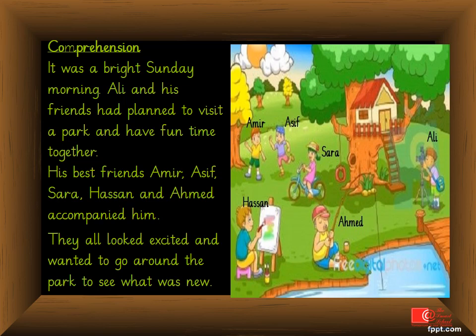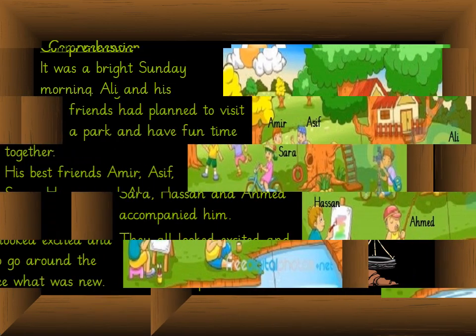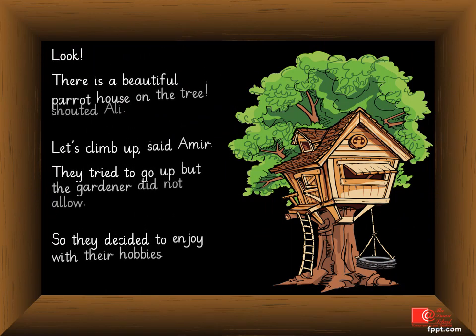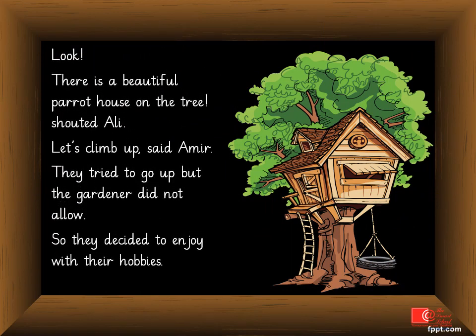Step 1: Reading. Look, there is a beautiful parrot house on the tree, shouted Ali. Let's climb up, said Amir. They tried to go up, but the gardener did not allow. So they decided to enjoy with their hobbies.